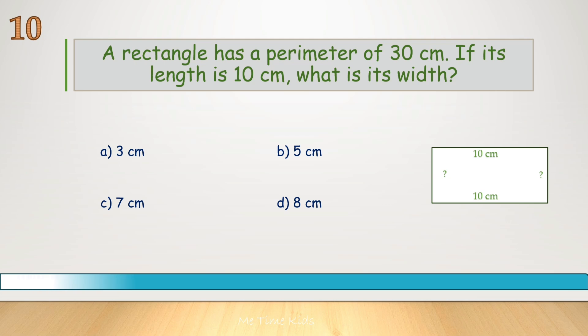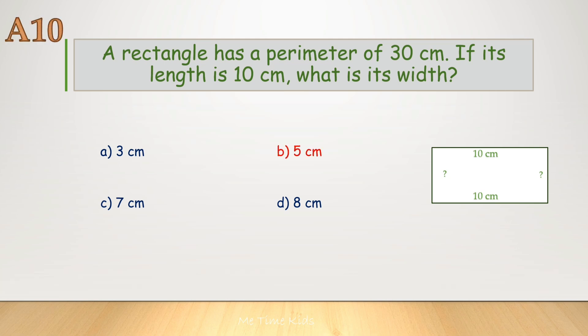A rectangle has a perimeter of 30 centimeters. If its length is 10 centimeters, what is its width? Correct answer is B, 5 centimeters.